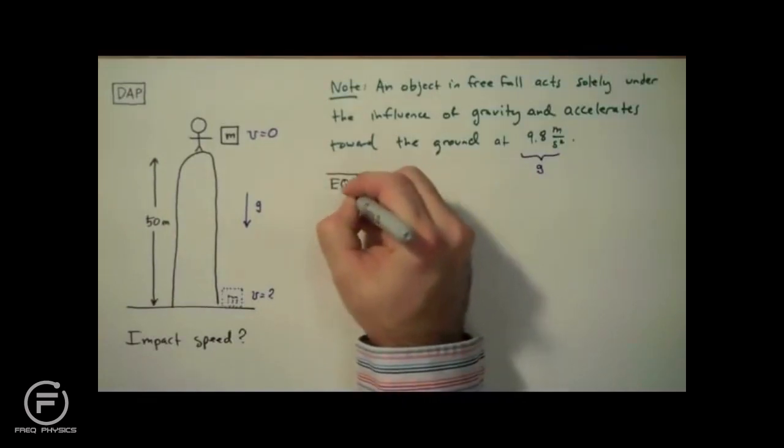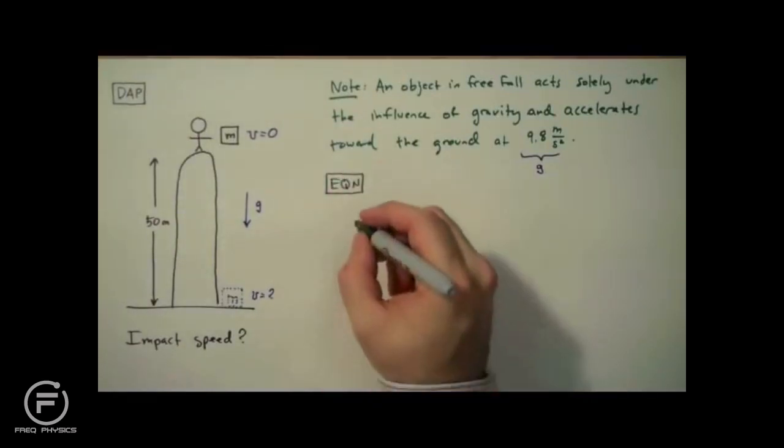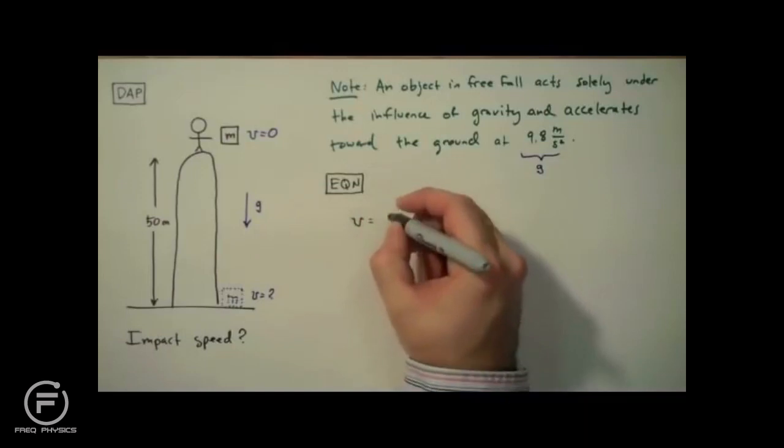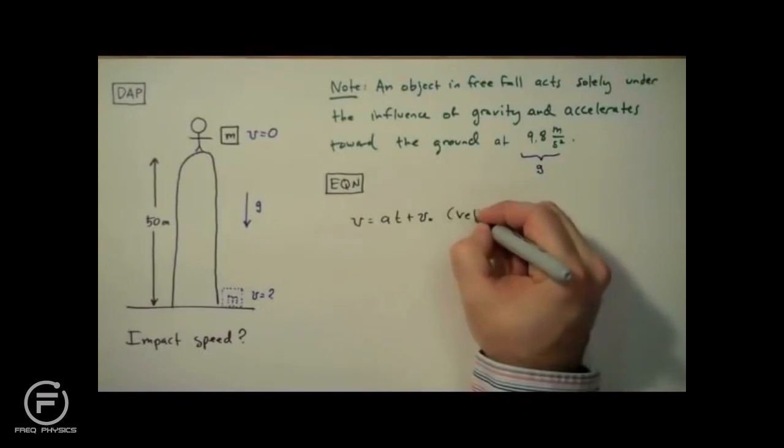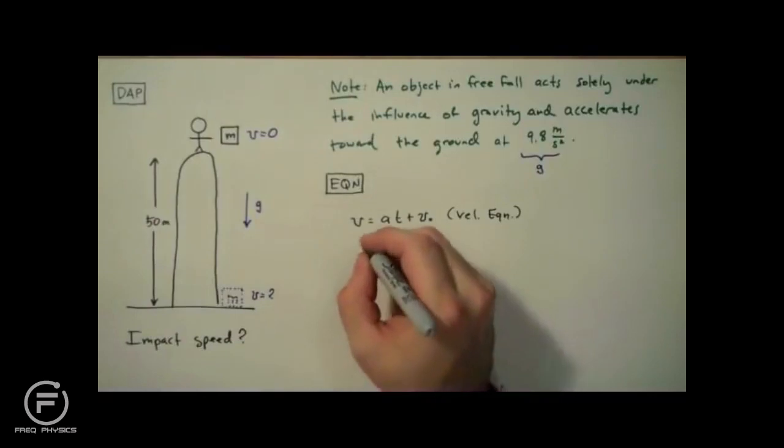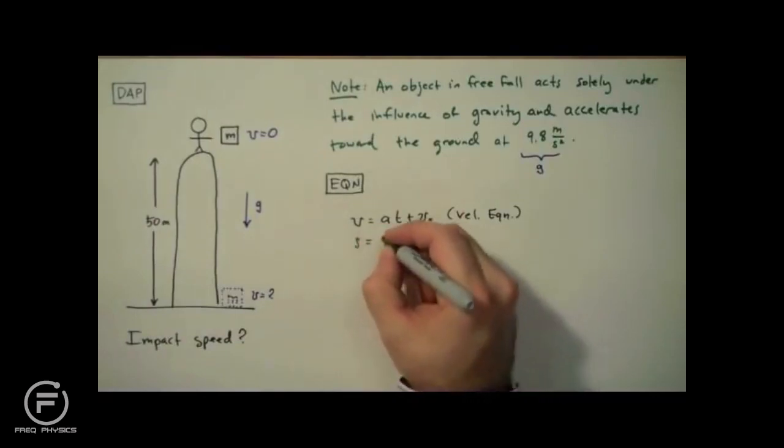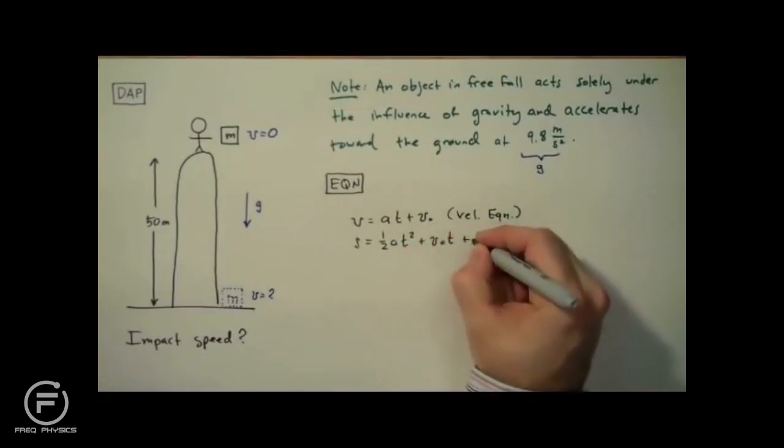There are three equations that we can use to analyze a body undergoing constant acceleration. They are called the kinematic equations. Some of us in Detroit affectionately refer to them as the big three. The first of which is the velocity equation. Here t represents time. And if we integrate the velocity equation with respect to time, we get the displacement equation. Here s represents displacement.